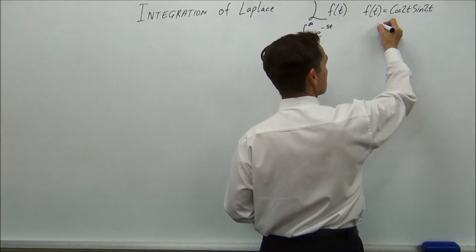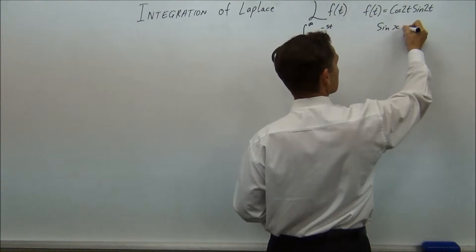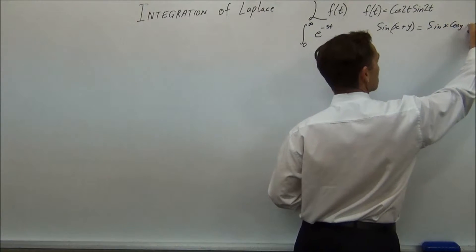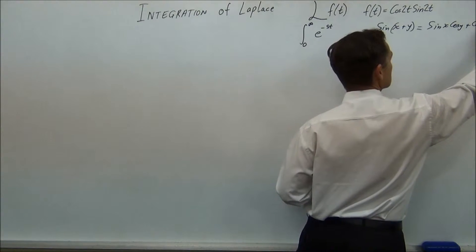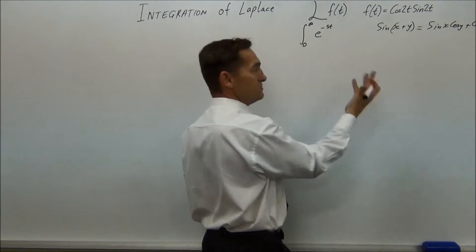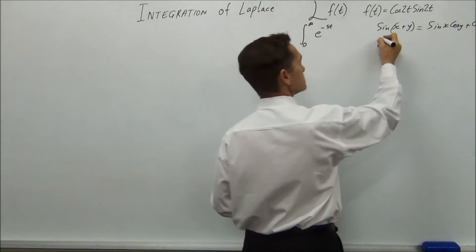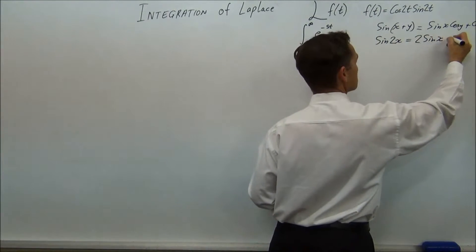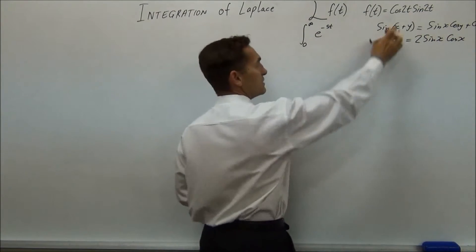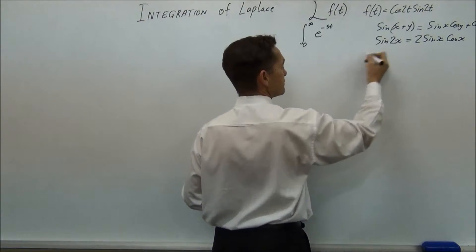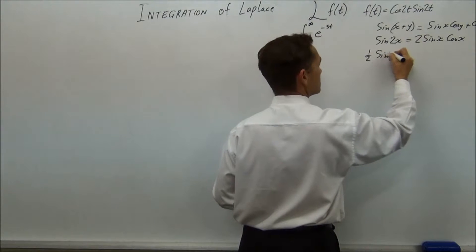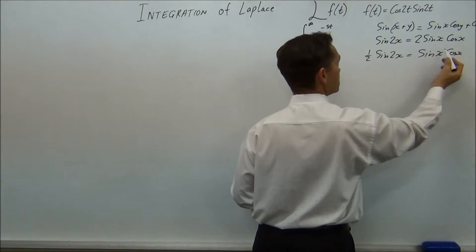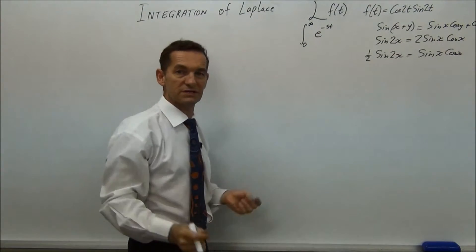The year 11 rule says that sin(x + y) = sin x cos y + cos x sin y. Simplifying by putting in x for both, we get sin 2x = 2 sin x cos x. Moving the 2 over gives us ½ sin 2x = sin x cos x. And this is exactly the same form as what we have — the only difference is that x is 2t.